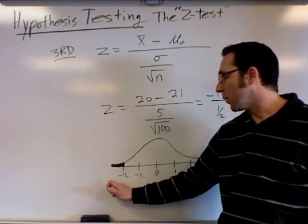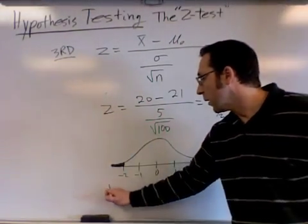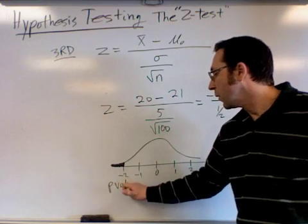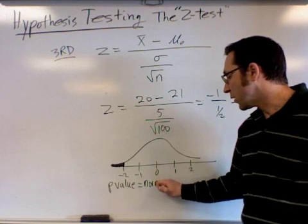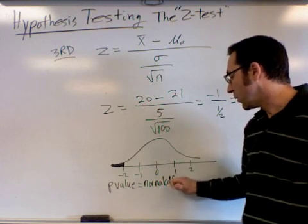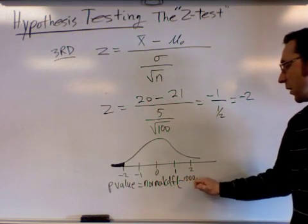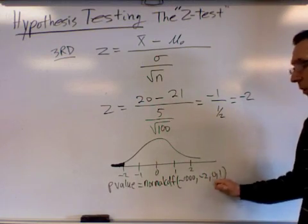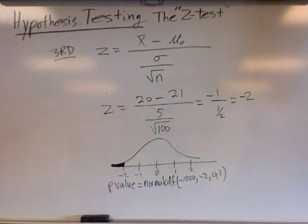That probability right there is called the p-value, and that can be calculated by using the normalcdf command on the calculator or using some tables that might be available to you. So the normalcdf of negative 1000 standard deviations to negative 2, with 0 and 1 being the mean and the standard deviation, comes out to equaling about 2%.